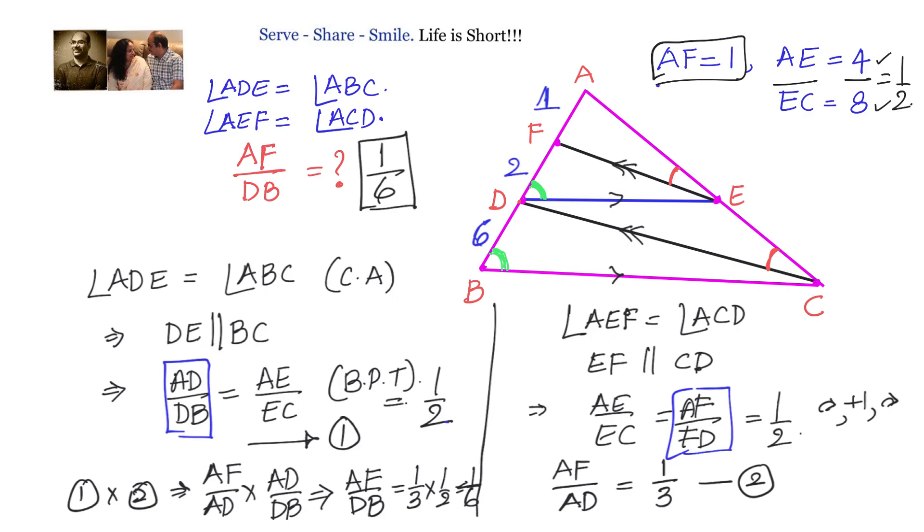We can do it that way also. Without taking AF equals 1, we can solve this and find that AF by DB equals 1 by 6.